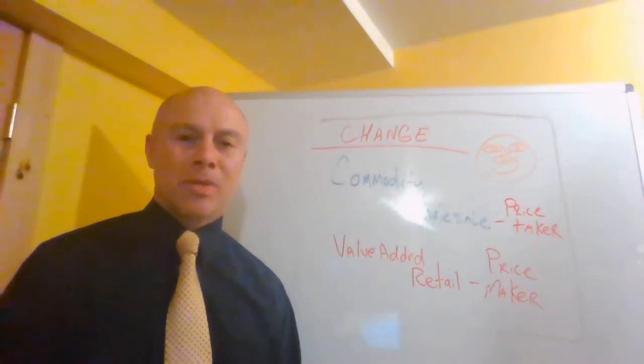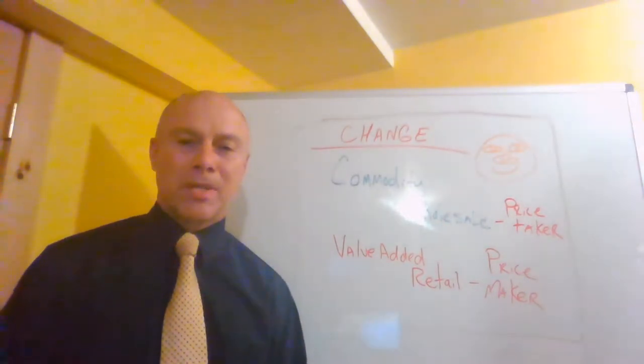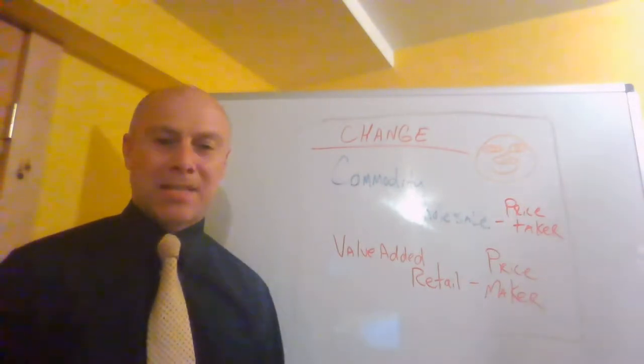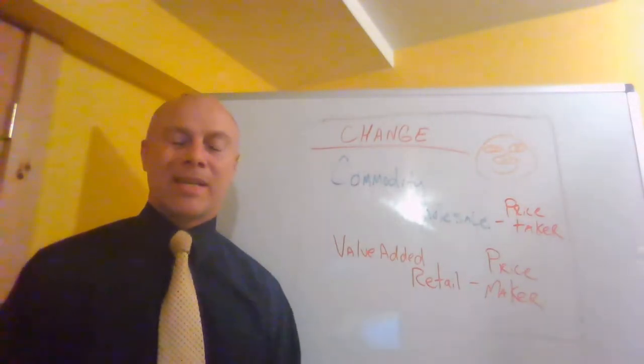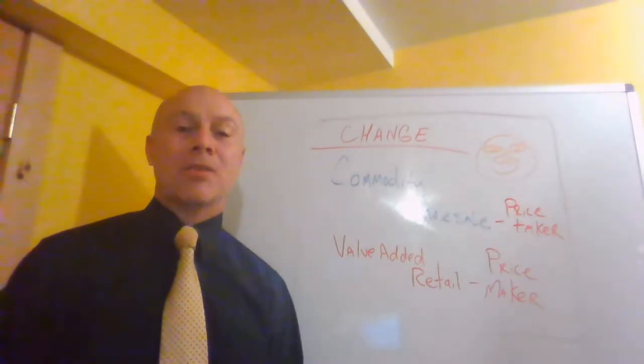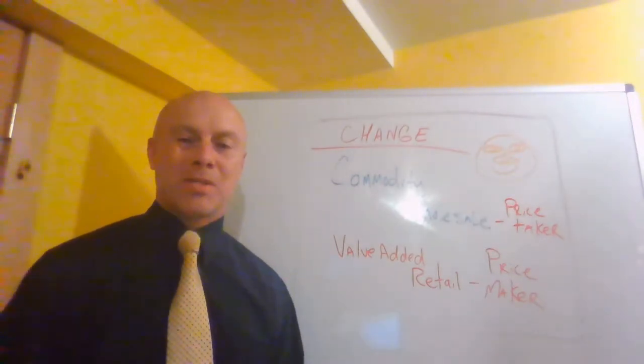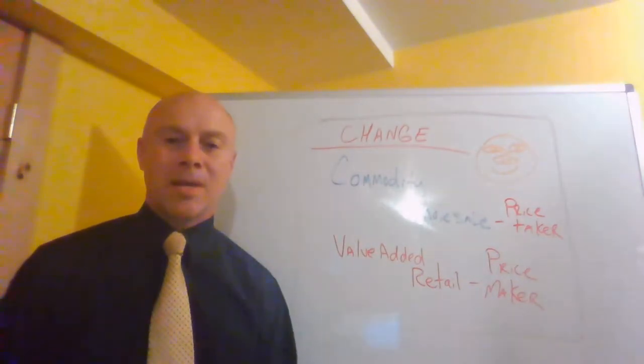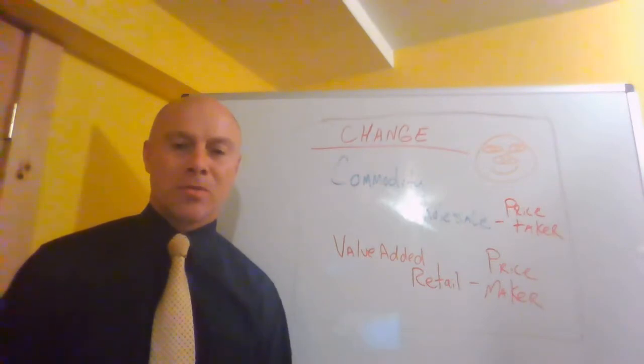And because she can do this, she's transitioning from a commodity person, commodity business to a value-added business. And the really wonderful, fantastic million-dollar thing is this person can now set a price and charge that price to the consumer. Therefore, passing on cost increases, including inflationary increases, passing it on to the end user.